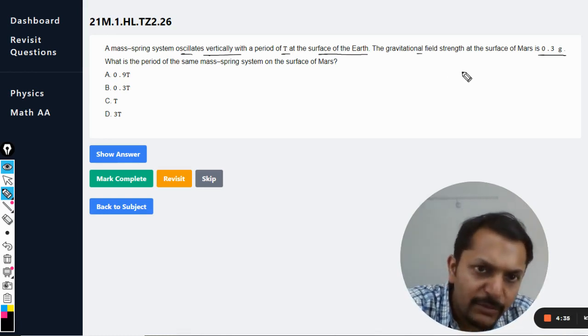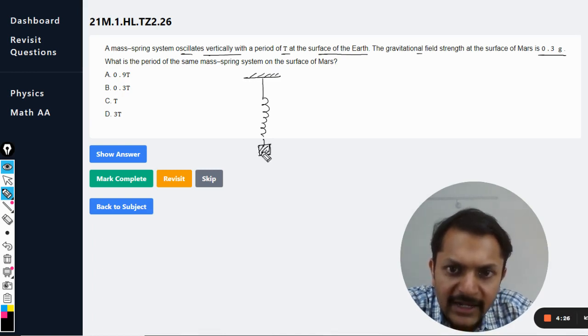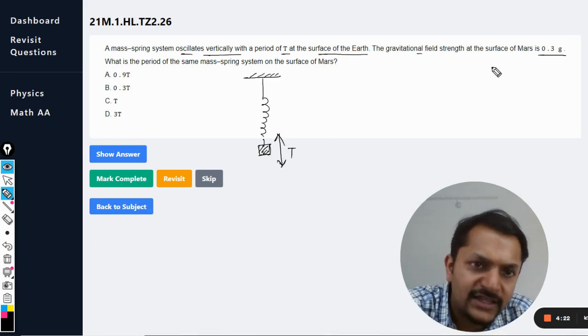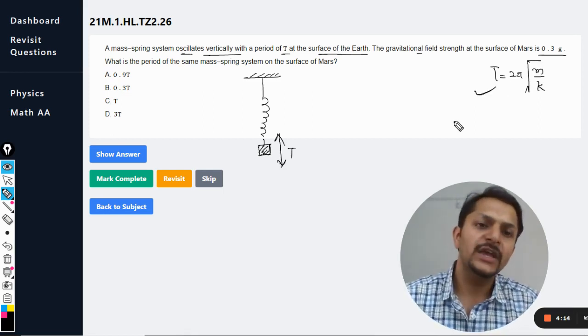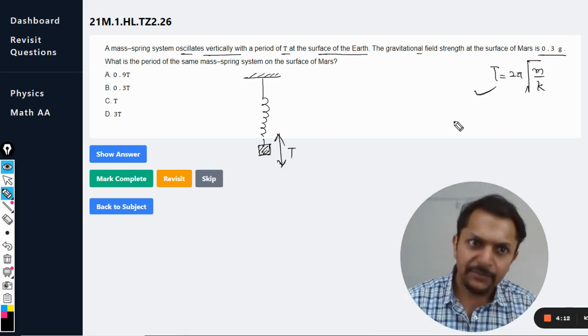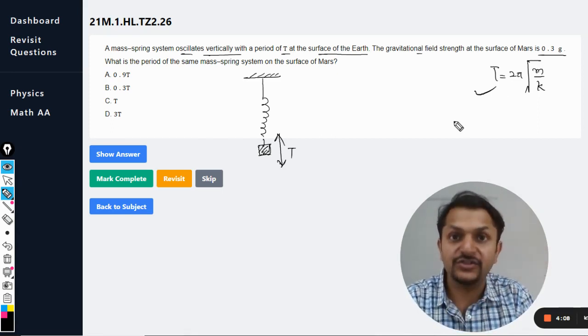So first of all, my dear students, what is happening here is this system is vertical, and we are interested in the time period. Now we know that the time period for the spring is given by 2π√(m/k). This is the formula you can see from the data booklet also. So t equals 2π√(m/k), and there is no variable which talks about the acceleration due to gravity.